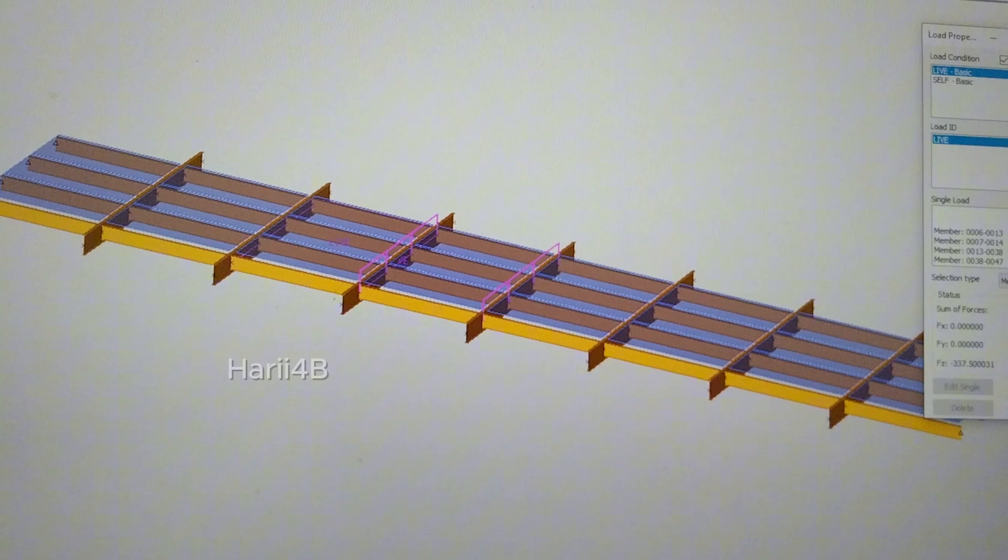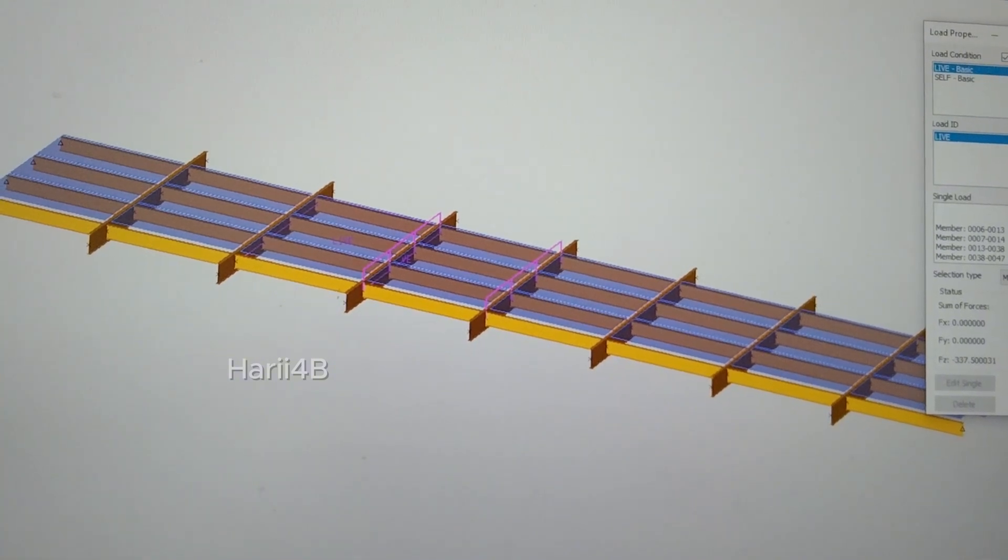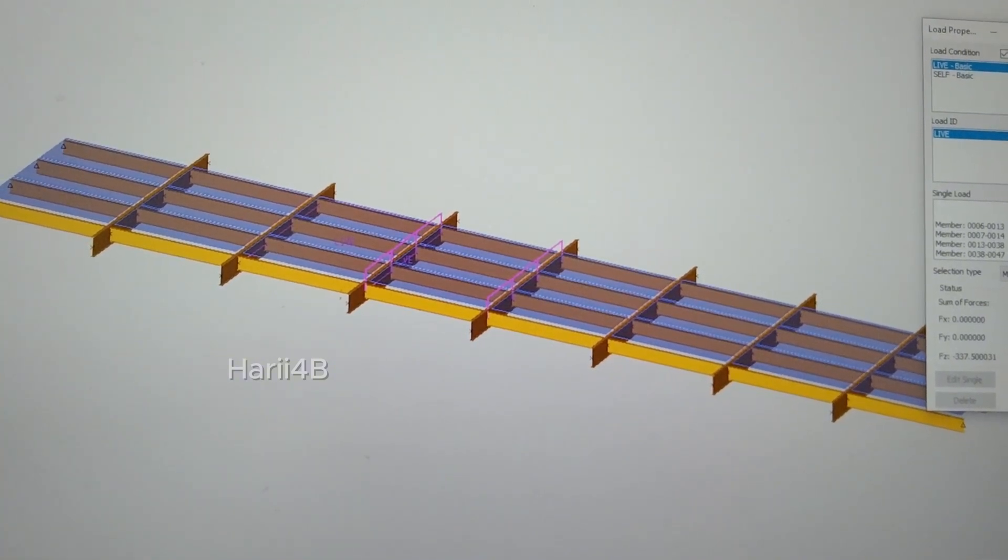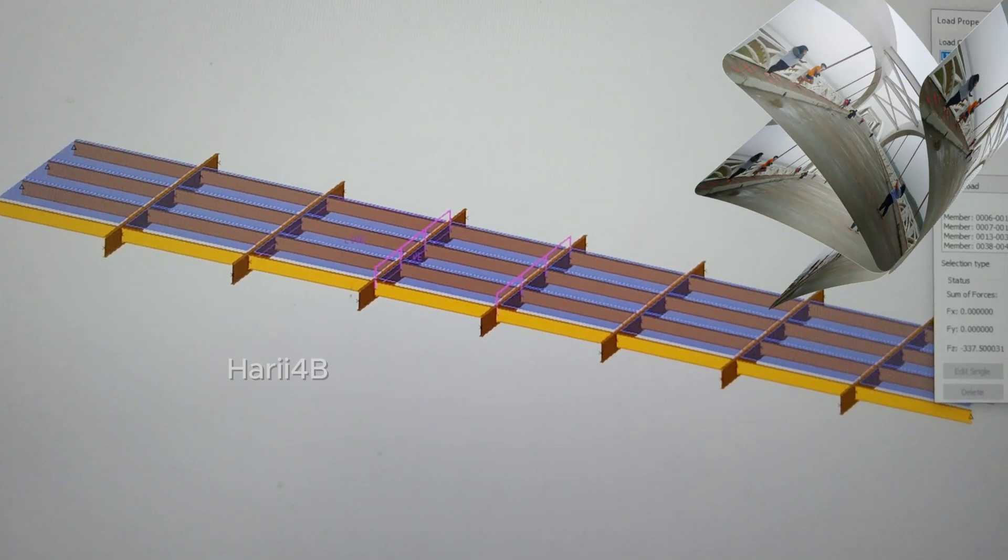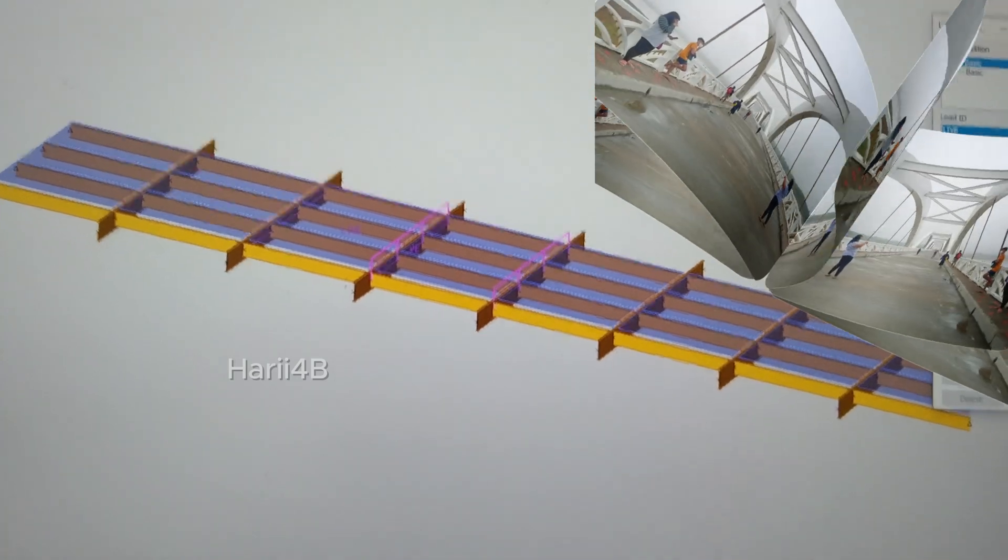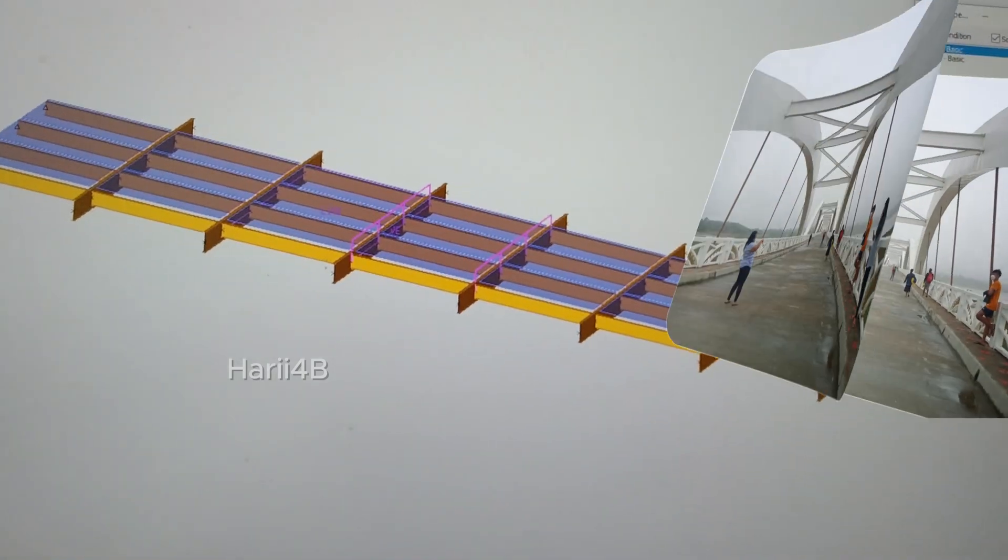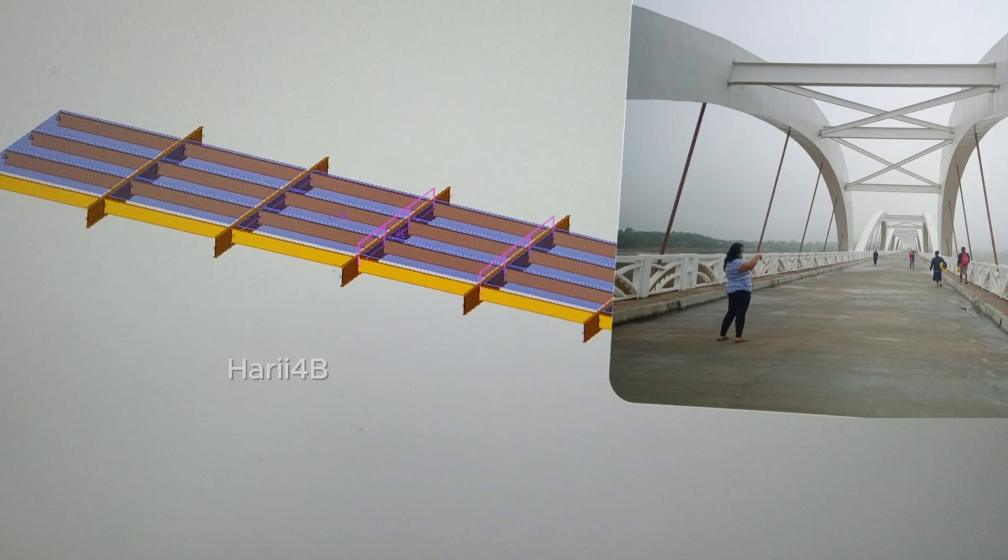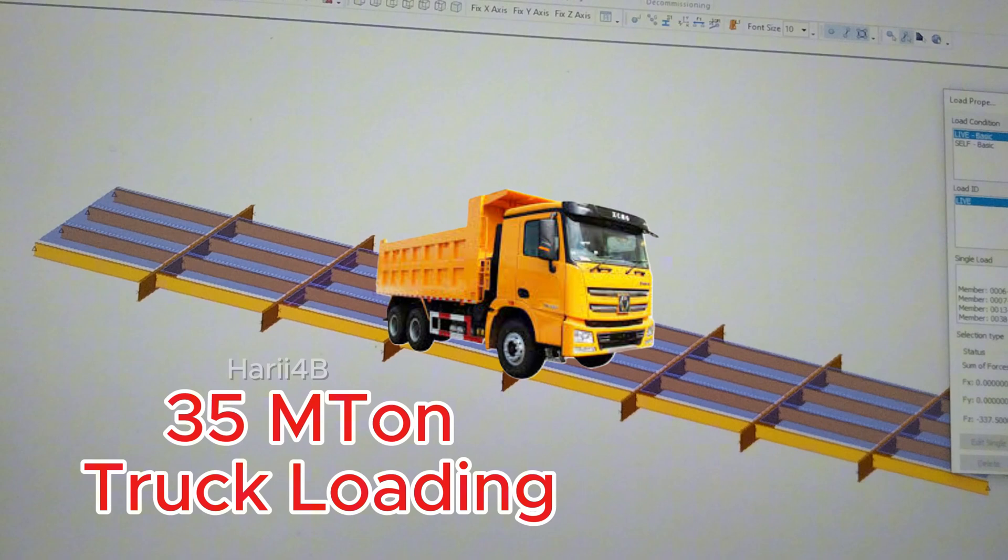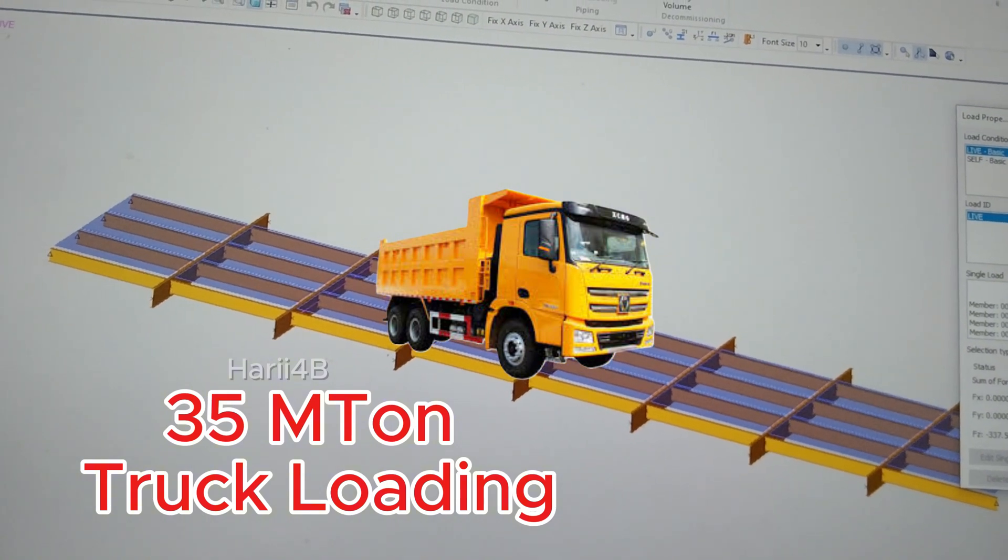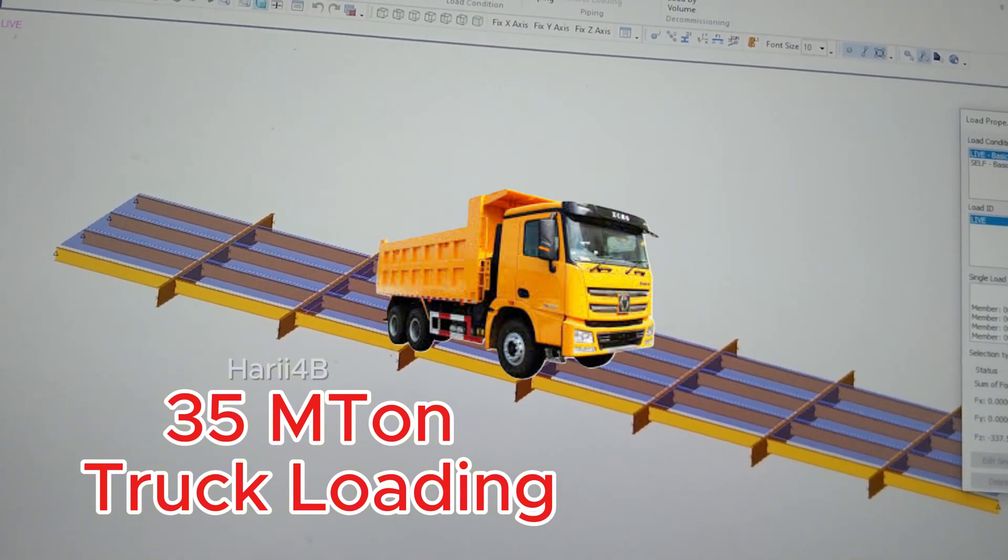Let's apply a load here. The load of this bridge - we have the self-weight, meaning the weight of the framing, the steel and the concrete deck, and then we have a live load which is truck load. In this case I applied something like 35 tons gross on the full width of the bridge.